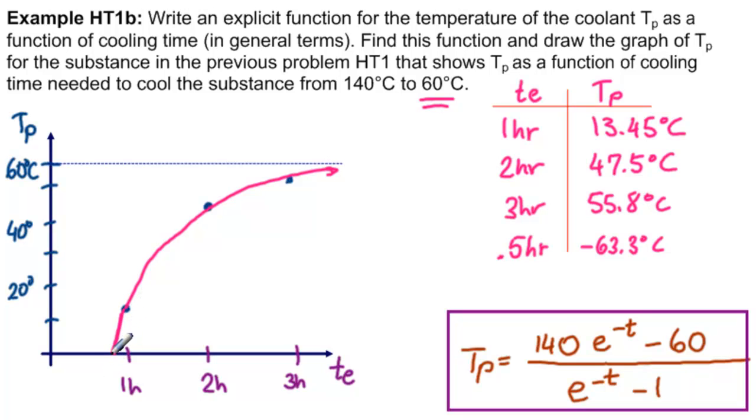So this drops very sharply. And, of course, continues down here if that's possible. And we have to get this far down by half an hour off our image here for that minus 63.3. So this is the graph of TP as a function of the cooling time, as required by the second part of the problem. And we are done.